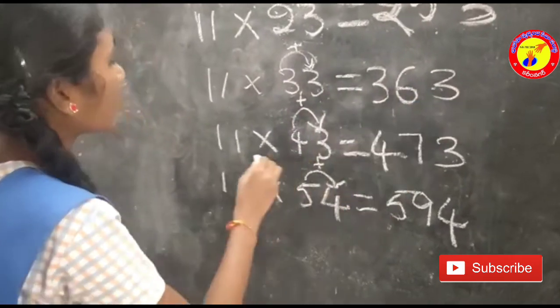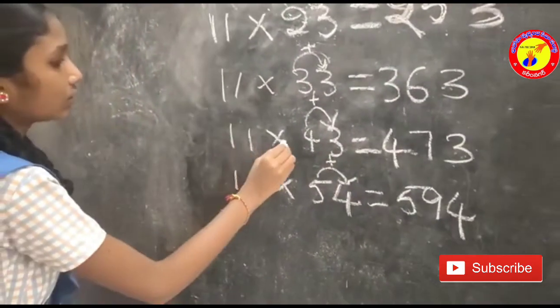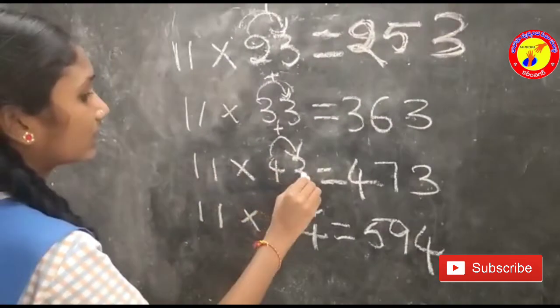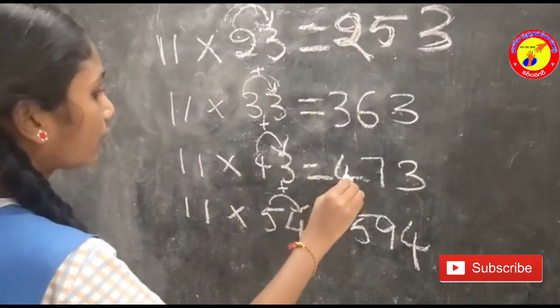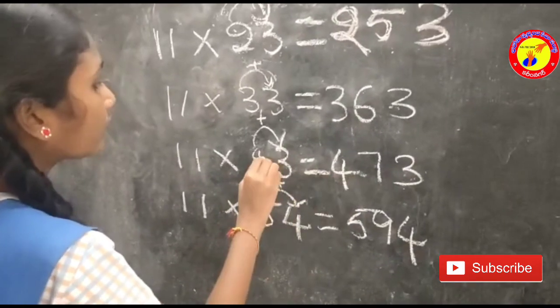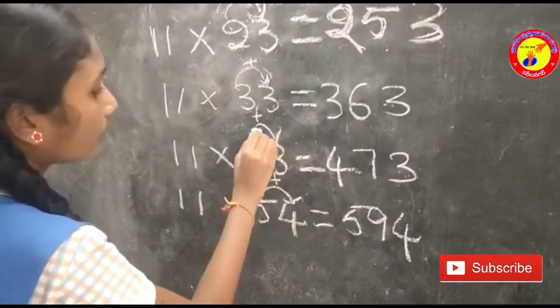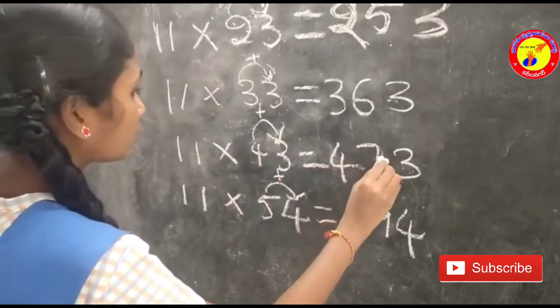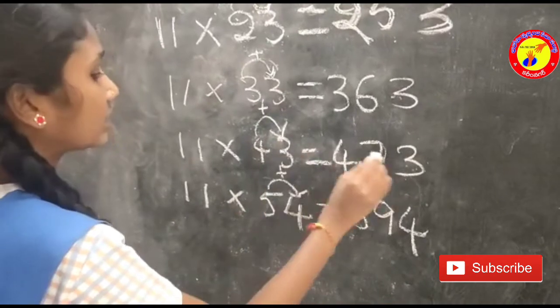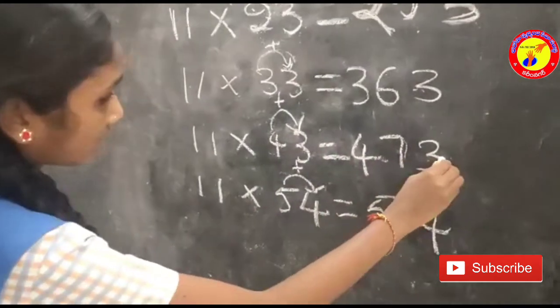11 into 43 is equal to: this 4 is here, 4 plus 3 is equal to 7, and this 3 is here. So the answer is 473.